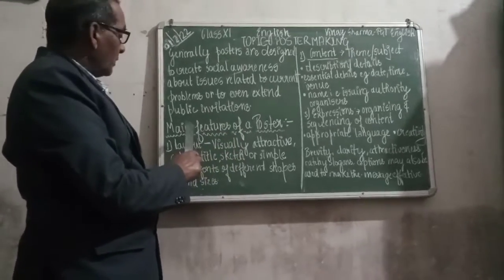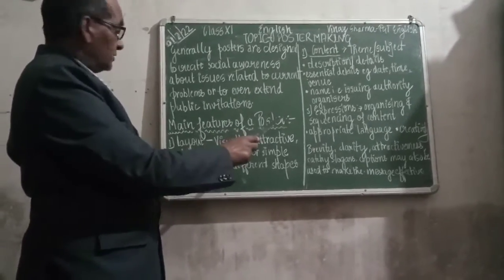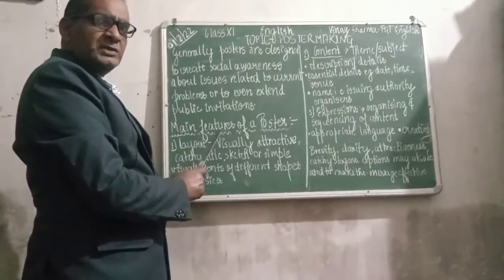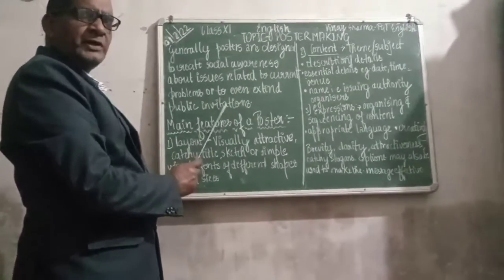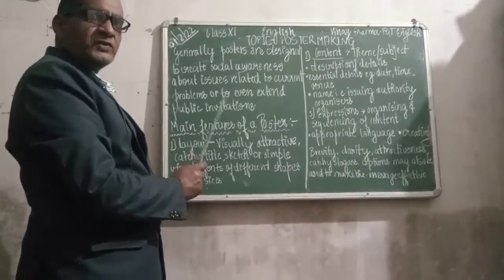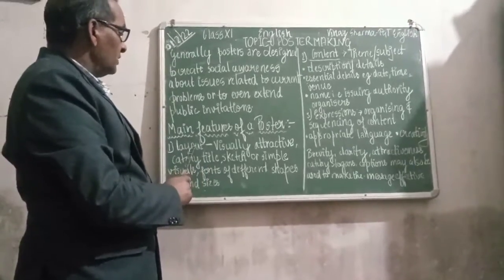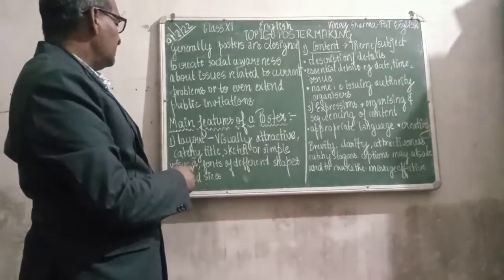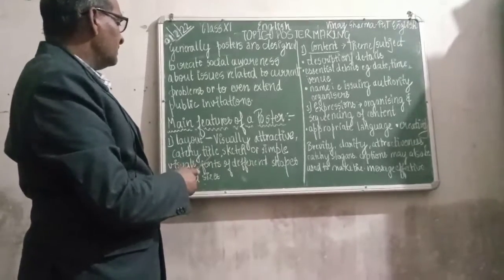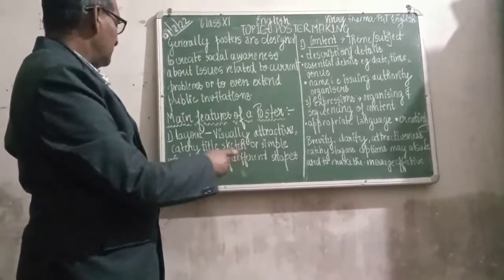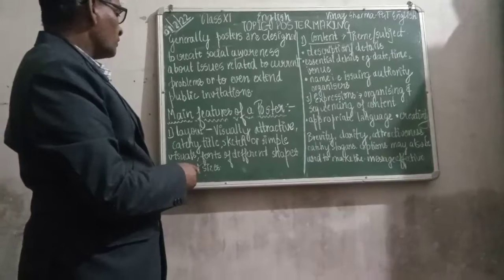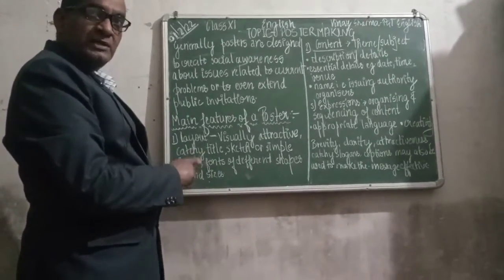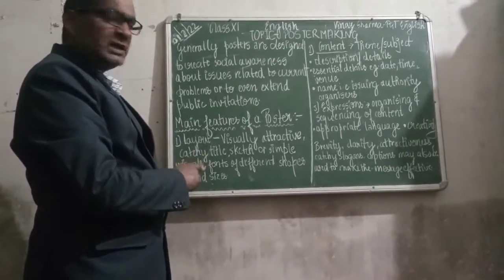Now we will discuss about the main features of a poster. Whenever we make a poster, we have to keep these points in mind. First of all, there is layout — visually attractive, catchy title, sketch or simple visual, forms of different shapes and sizes. All these things are included in the layout.